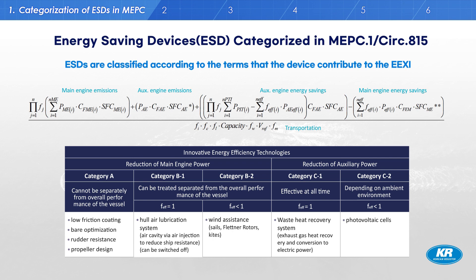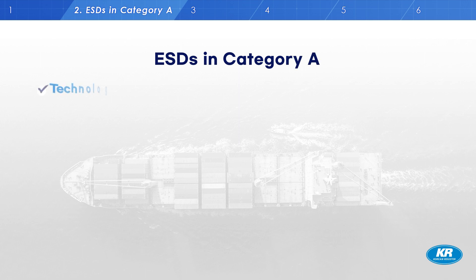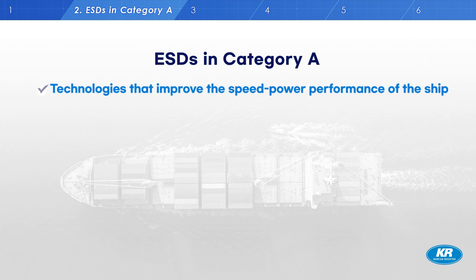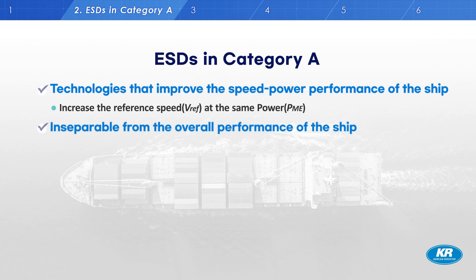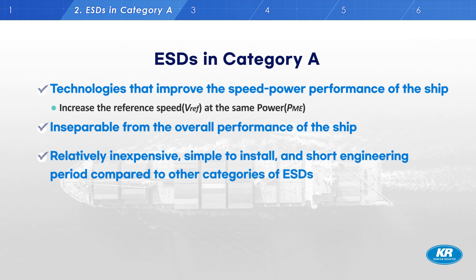ESDs in each category will be explained in detail in the next slides. Category A ESDs are technologies that can improve the speed-power performance of the ship, meaning they can increase the reference speed for the fixed reference power. These devices have advantages in that they are relatively inexpensive, simple to install, and require a short engineering period compared to other ESDs.